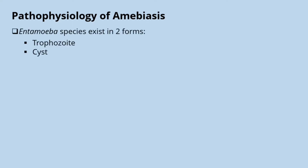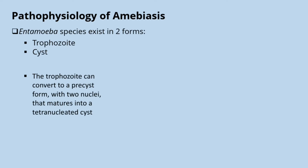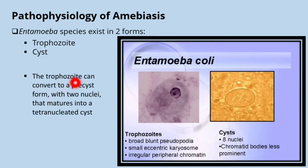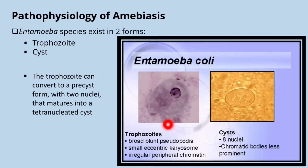Regarding the pathophysiology of amoebiasis, Entamoeba species exist in two forms: the trophozoite and the cyst. The trophozoite can convert to a pre-cyst form with two nuclei that matures into a tetranucleated cyst. The trophozoite has a broad bland pseudopodia, small eccentric karyosome, and irregular peripheral chromatin. The cyst has eight nuclei and the chromatoid bodies are less prominent.